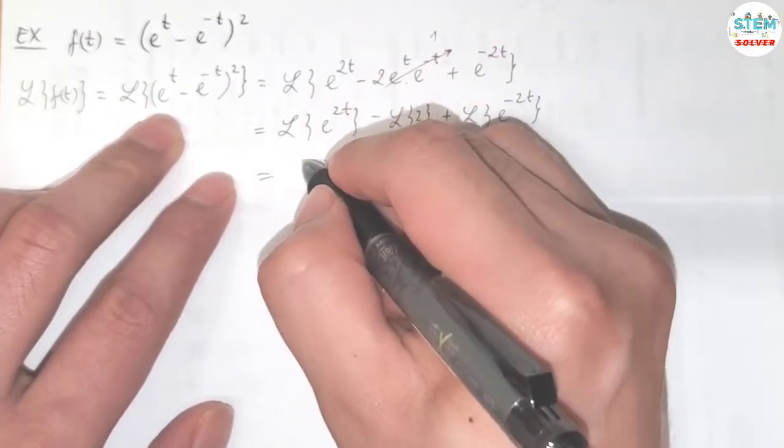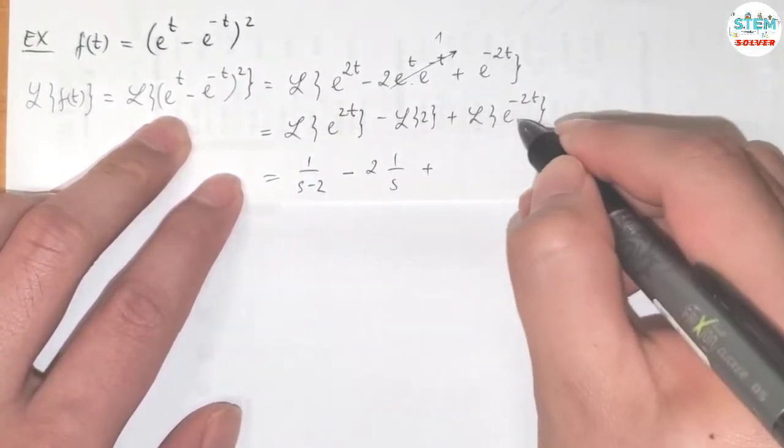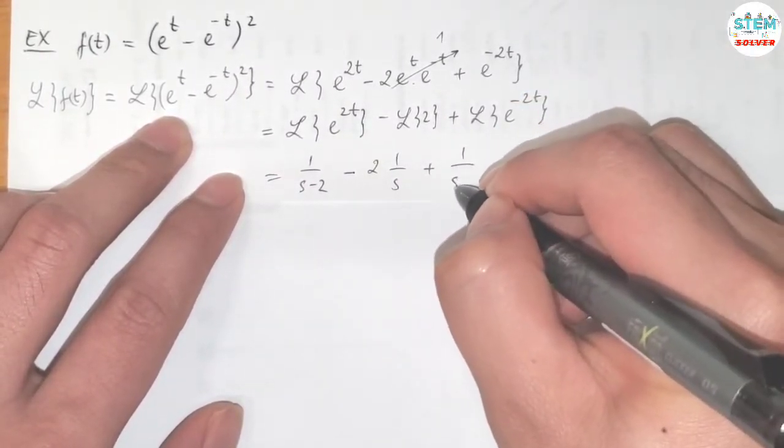Now L of e to the 2t is equal to 1 over s minus 2, minus 2 and L of 1 is 1 over s, plus L of e to the negative 2t is equal to 1 over s plus 2.